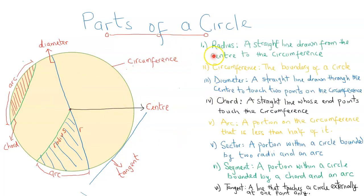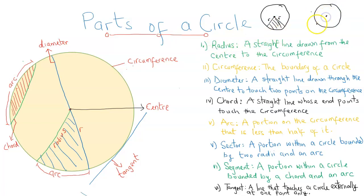These are the notes — you can pause the video to go through them. To summarize: a sector is the region bounded by two radii and an arc. A chord divides the circle into a minor segment and a major segment. The minor sector is the smaller region bounded by two radii and an arc, while the major sector is the larger one. In our next video we are going to be solving a problem involving a sector of a circle.